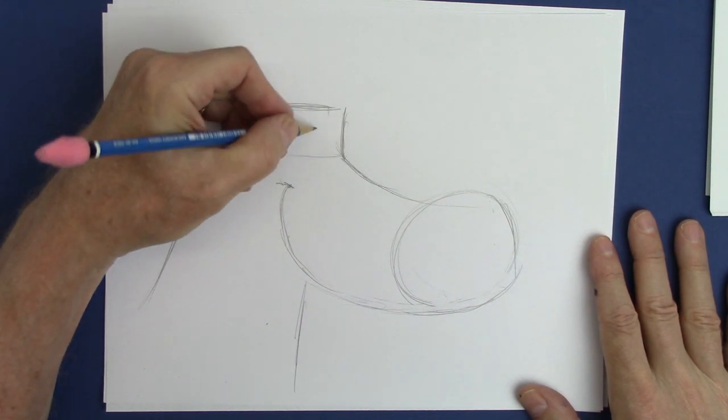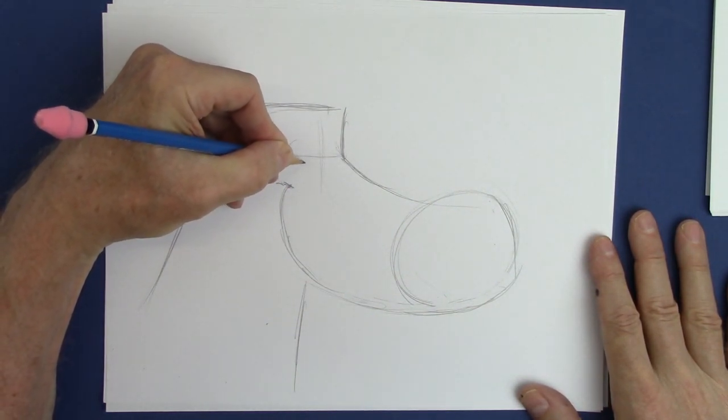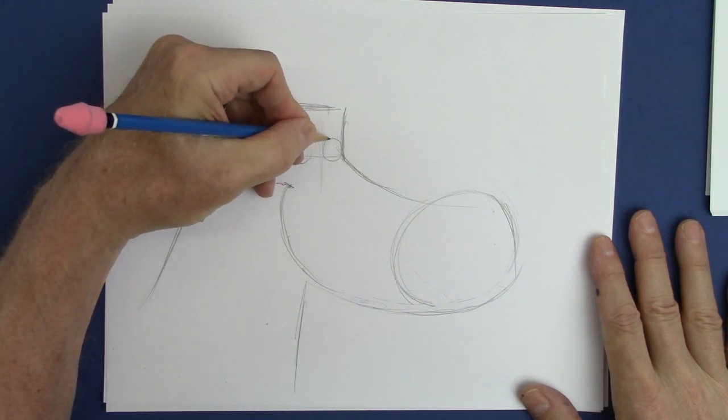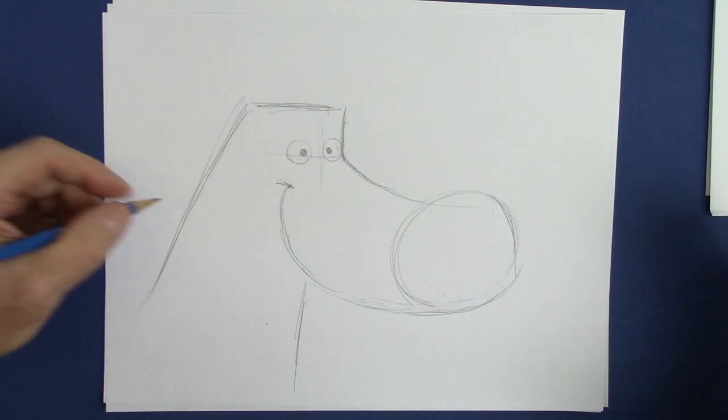Alright, now here is the eye line, the center line. Now what we're going to do is put both eyes on the same side of the head. That makes it extra goofy. This is if you want to order a horse with extra goofiness. You've got it.